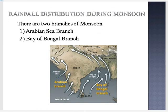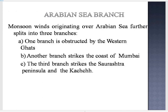Now, regarding the rainfall distribution due to the monsoon — there are two branches: the Arabian Sea branch and the Bay of Bengal branch. The Arabian Sea branch originates over the Arabian Sea and further splits into three branches.